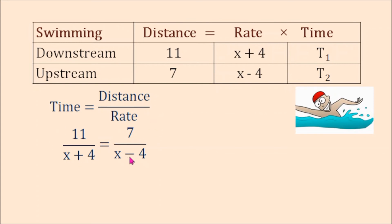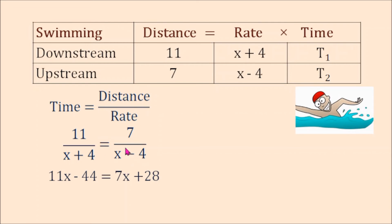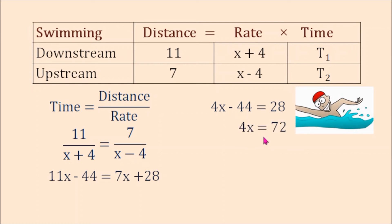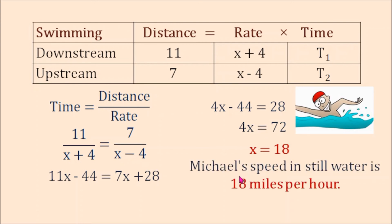We equate the two because the problem says the time spent swimming downstream equals the time spent swimming upstream. We cross-multiply: 11 times x is 11x, and 11 times negative 4 is negative 44; that equals 7x plus 28. Subtracting 7x from both sides gives 4x minus 44 equals 28. Adding 44 on both sides gives 4x equals 72. Dividing both sides by 4, x equals 18. This means Michael's speed in still water is 18 miles per hour.